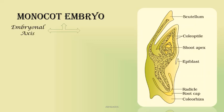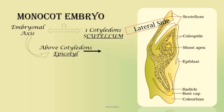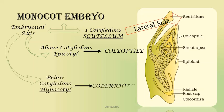The monocot embryo has the embryonal axis and there is only one cotyledon — the scutellum — present on the lateral side of the shoot apex or the coleoptile. The coleoptile comprises the shoot apex and some leaf primordia. Below the cotyledon is the hypocotyl, which has the coleorhiza. The coleorhiza contains the radicle, which will later form the root, and the root cap.